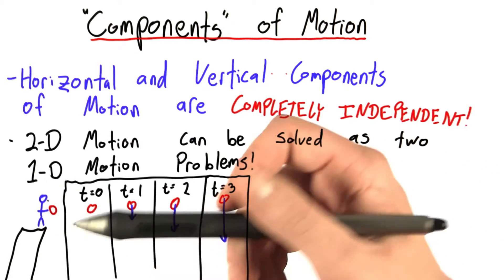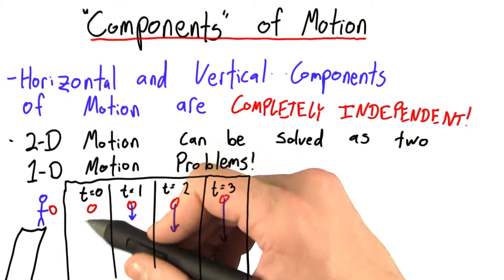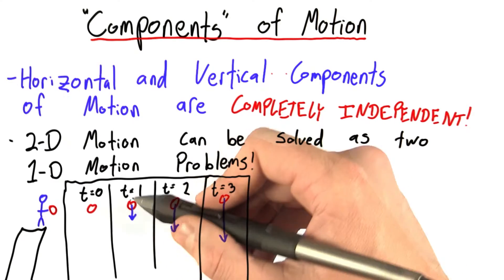We've already shown how in one dimension, for example, dropping a ball, at the instant when we drop the ball, it has no velocity, not quite yet. One second later, it's picked up some velocity.